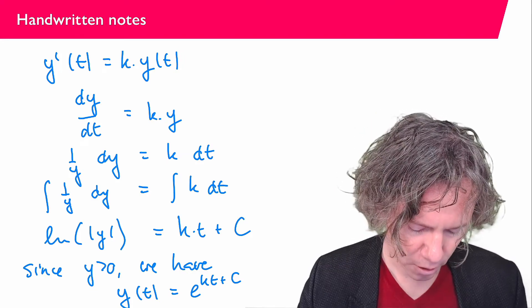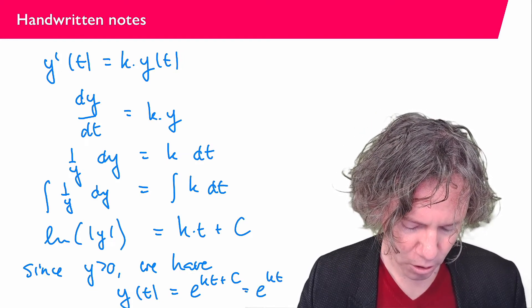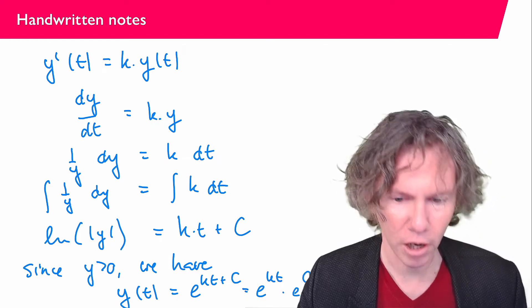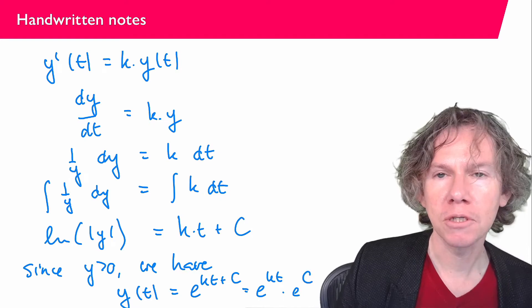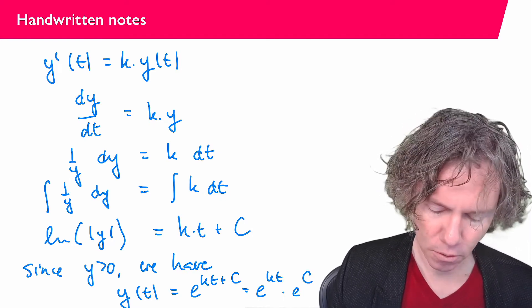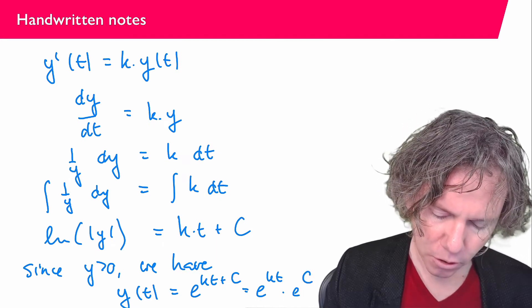I can say that equals e^(k·t) times e^C, and e^C is just a new constant. So let's go to the next slide.